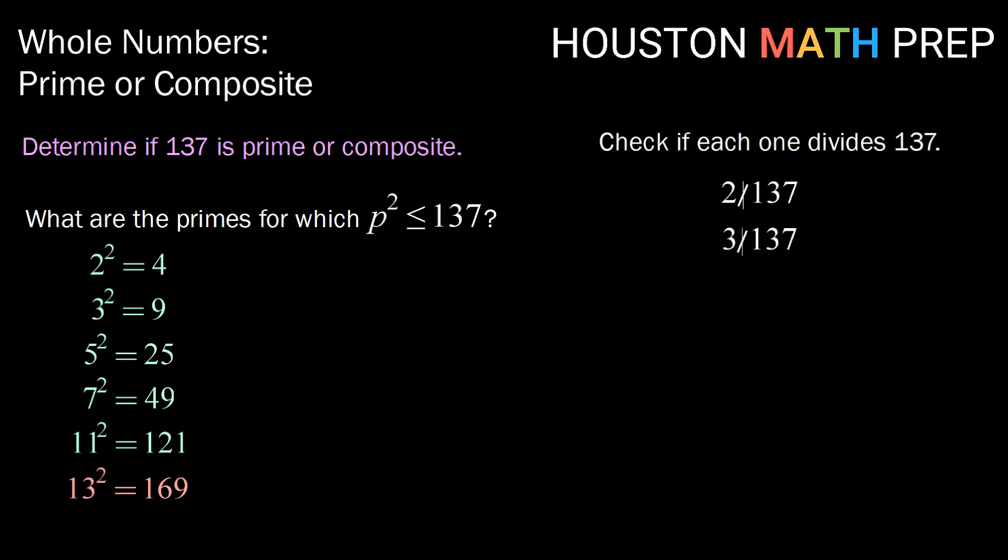Because 137 does not end in a 5 or a 0, we can see that 5 does not divide 137. We can also continue this pattern and check 7 does not divide 137 and neither does 11. So because none of the primes for which p squared is less than 137 divide evenly into 137, we can say that we know 137 is prime.